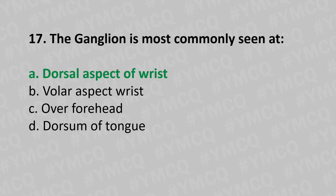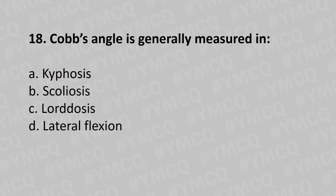Moving to our 18th question: Cobb's angle is generally measured in — option A kyphosis, option B scoliosis, option C lordosis, option D lateral flexion. And the answer is option B scoliosis.